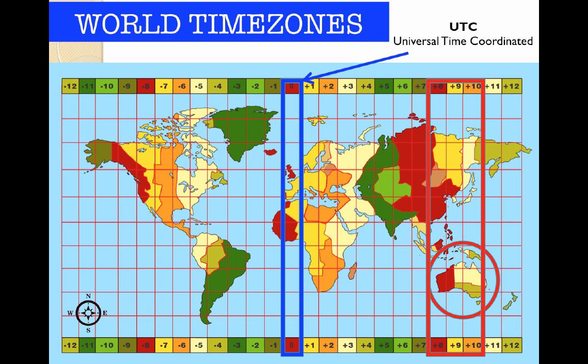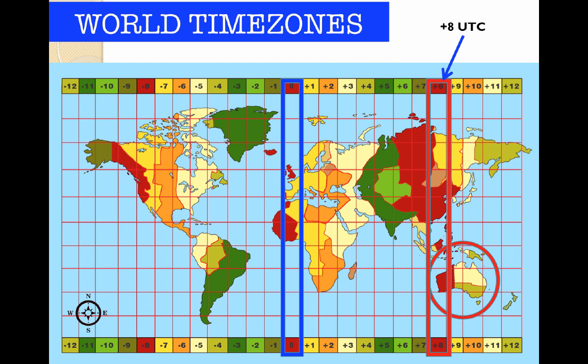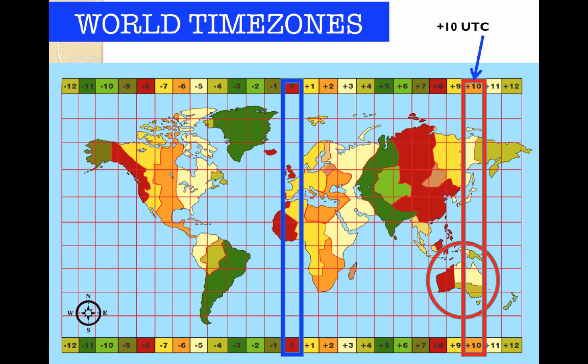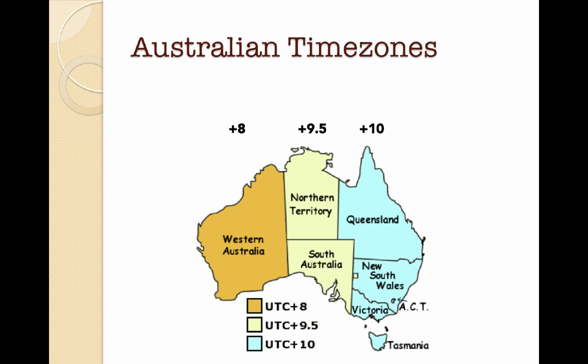Western Australia is plus 8, which means we are plus 8 hours from whatever the time is on the longitudinal line in Greenwich. Plus 9 means 9 hours ahead, and when we look at the map we see the central zone is actually plus 9.5. The eastern side is plus 10, meaning plus 10 hours from UTC. The plus 8, plus 9.5 and plus 10 tell us how far apart the times are across Australia.